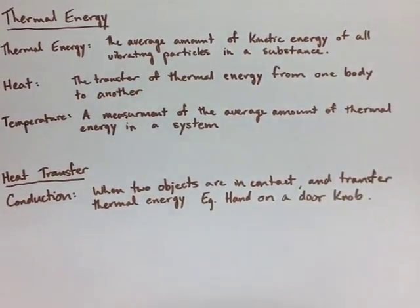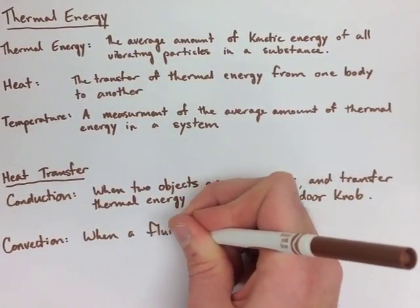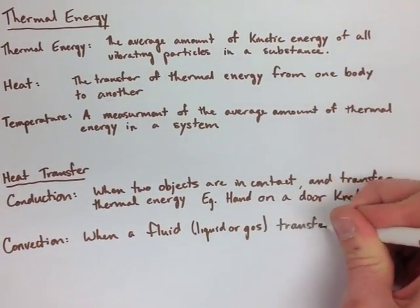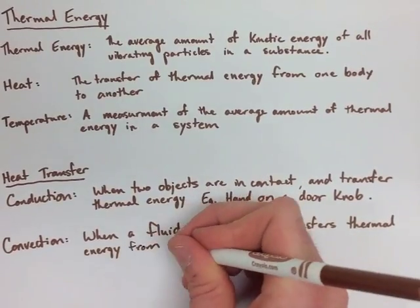The second one we're going to look at is Convection. This is when a fluid, and a fluid can be either a liquid or a gas, transfers thermal energy from one body to another. So like an oven or a pool heater.